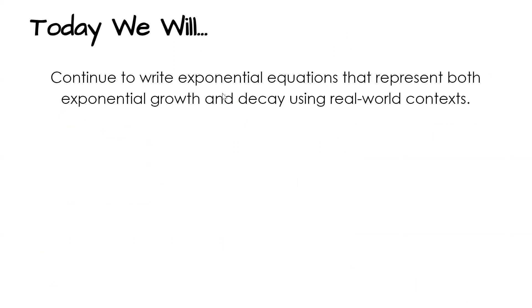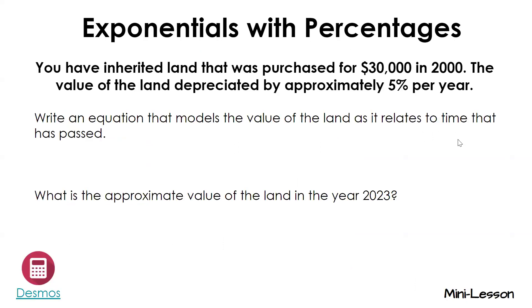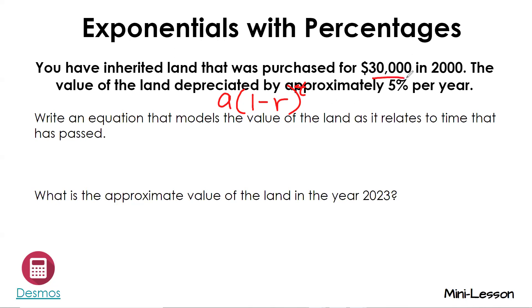Today we're going to talk about how to actually write out these equations — exponential equations that represent both exponential growth and decay in real world. Let's say that you've inherited land that was purchased for $30,000 in 2000. The value of the land is depreciated by approximately five percent per year. Write an equation that models the value of the land as it relates to time. We have a times (1 minus r) raised to t. What was the initial amount of the land? $30,000.